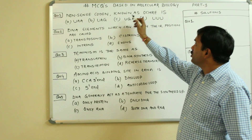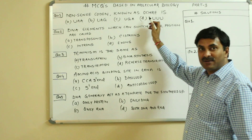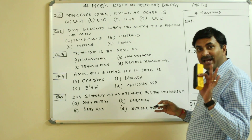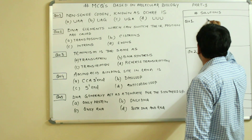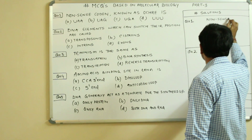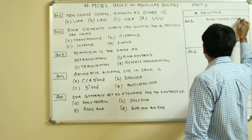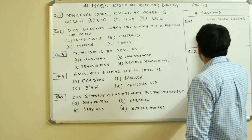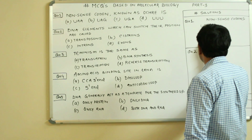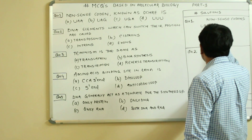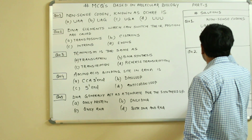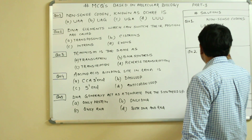The nonsense codon known as Ochre is... In the entire genetic code there are three nonsense codons: UAA, UAG, and UGA. They are called Ochre, Amber, and Opal.